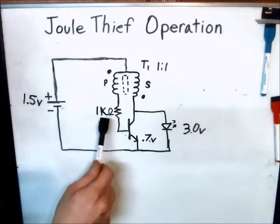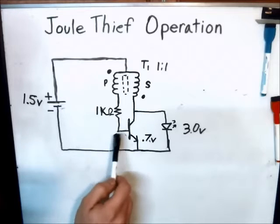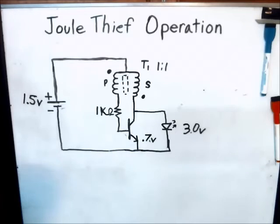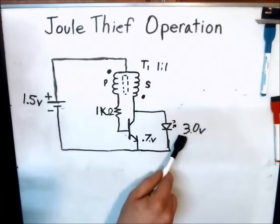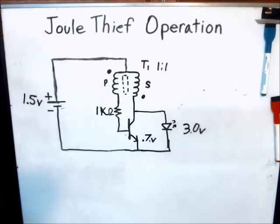The next component would be the 1k ohm resistor which goes to the base of your NPN transistor. And then there is the white LED which has the approximate voltage drop of 3 volts.